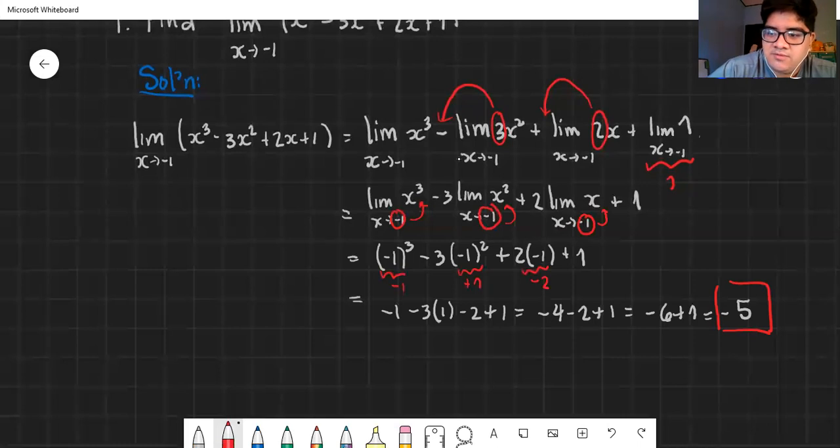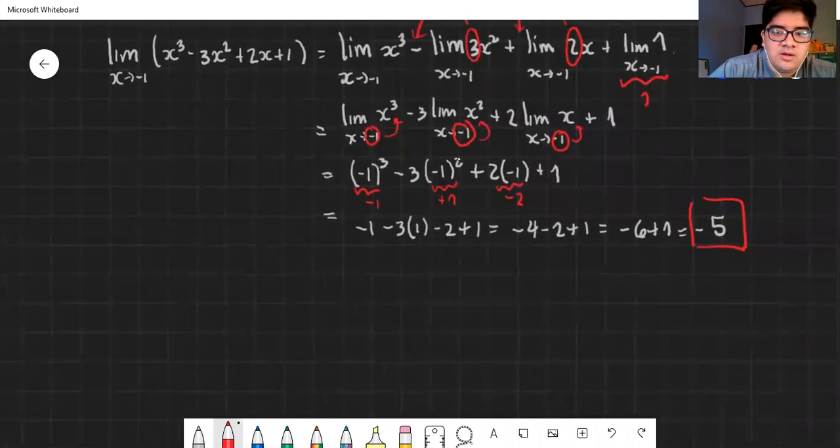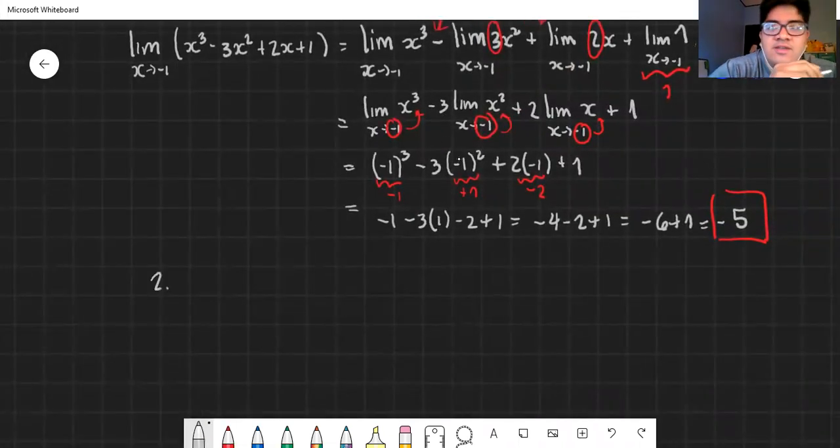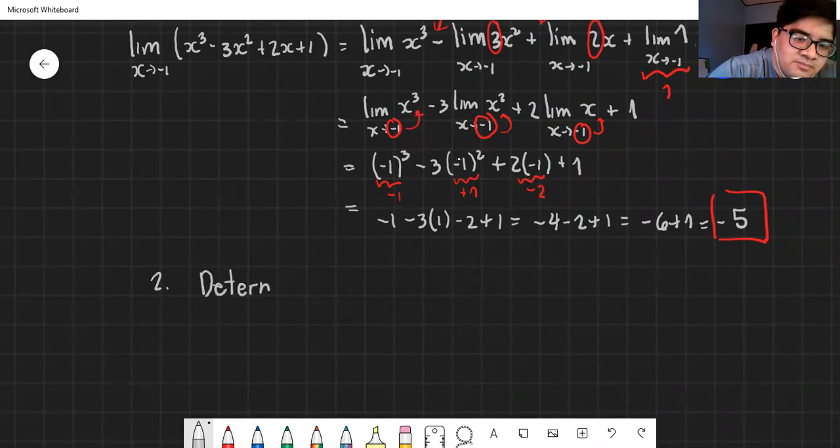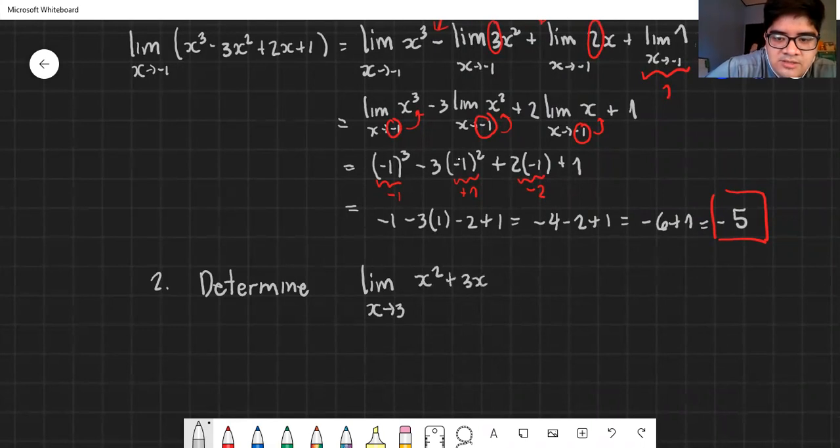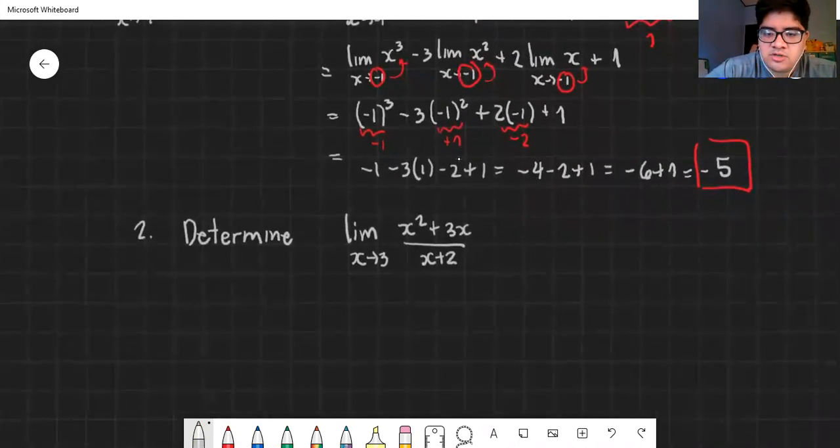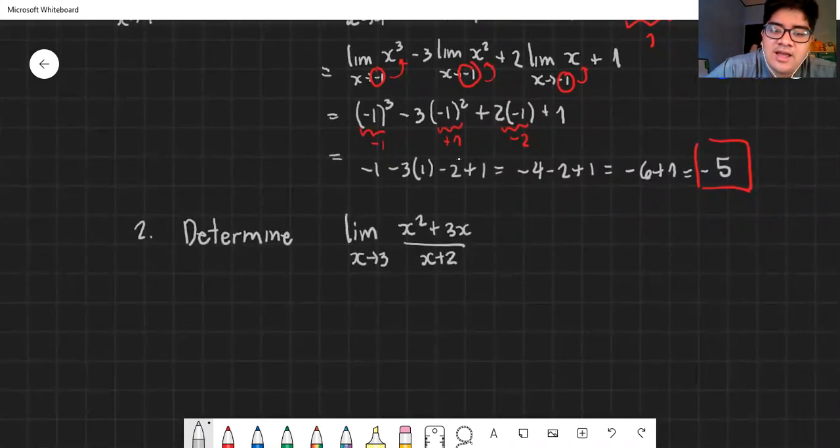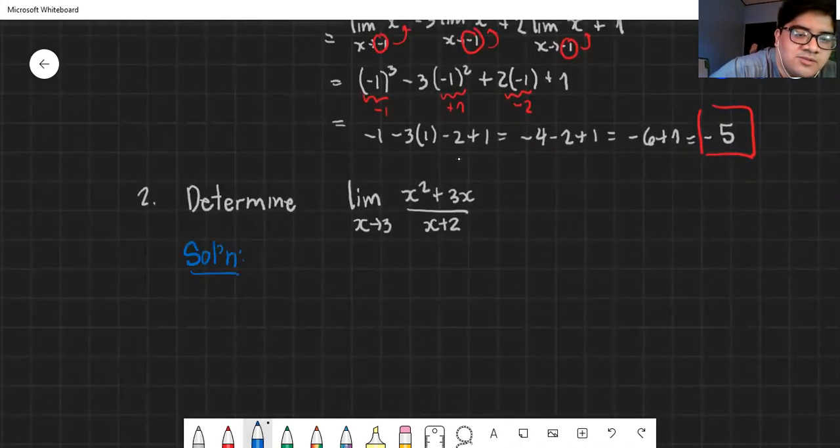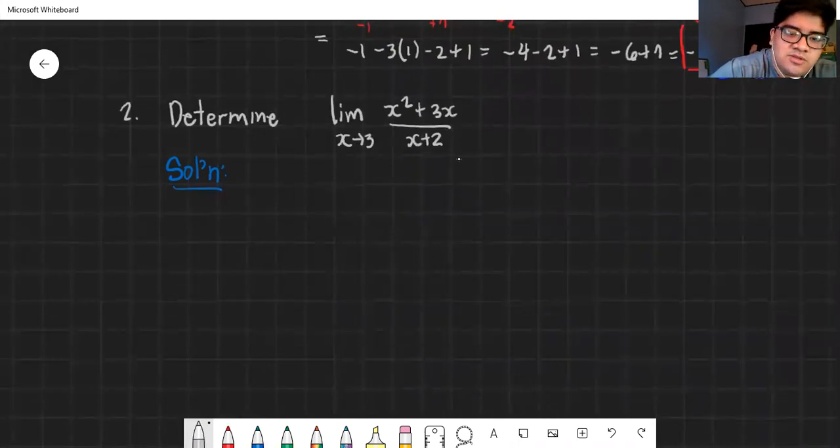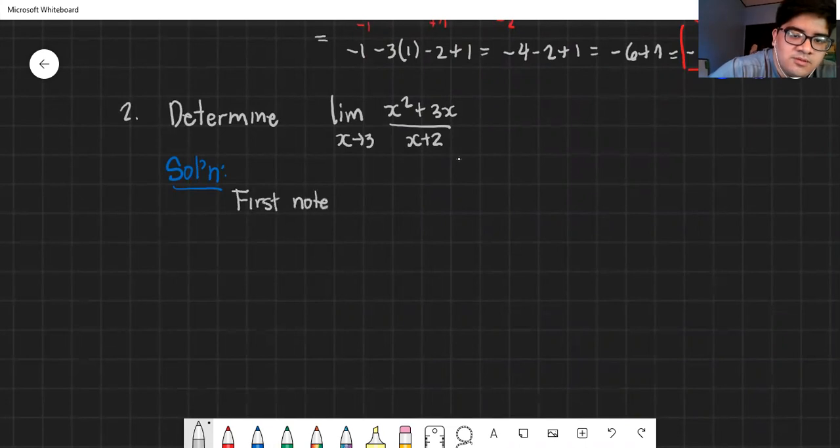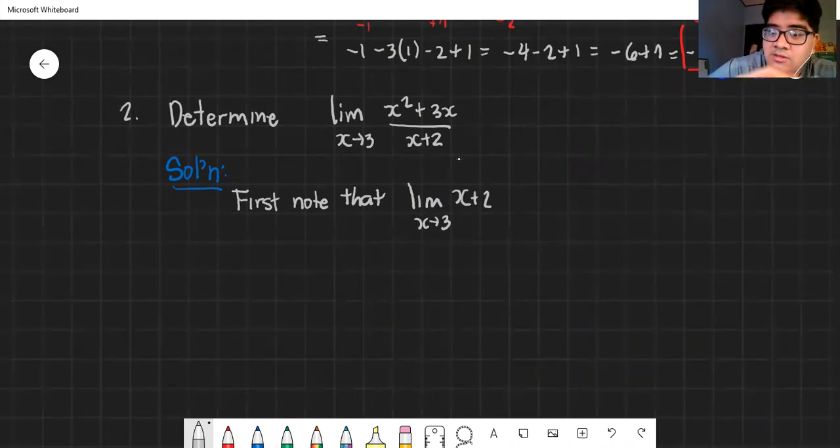That is the limit as that polynomial function approaches negative 1. So if we have a polynomial example, what about if we have a rational expression? Number 2: Determine the limit as x approaches 3 of x squared plus 3x over x plus 2. First, in a rational expression, we avoid having a zero denominator. We need to check that the denominator is not equal to zero. So how do we check this? First note that the denominator must not equal zero when we evaluate the limit. So we first check the limit of the denominator.